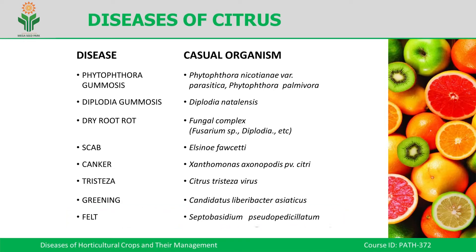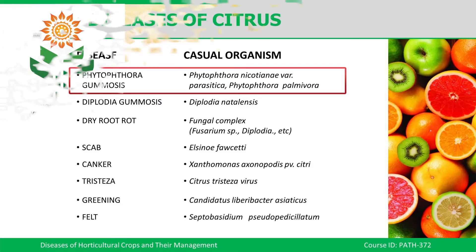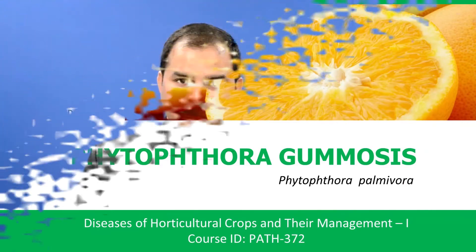We will learn one by one. First we will take Phytophthora gummosis, incited by Phytophthora palmivora and other species. Before going to learn about this particular disease, we will first look at the diagnostic symptoms — how to diagnose and identify this particular disease in the field — because the crop can be affected by several diseases at a time. We will see the diagnostic characters and distinctive features of the symptoms of this particular disease.